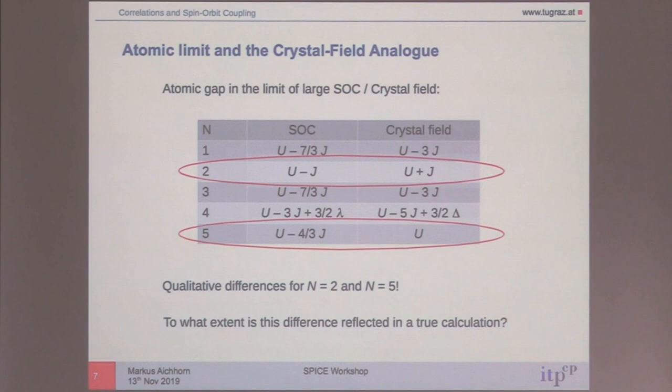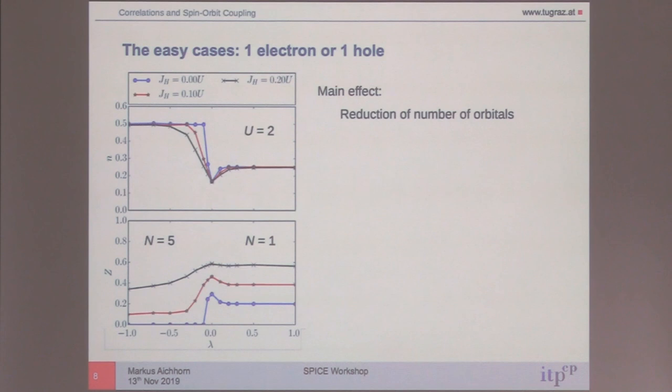These were general arguments just to tell you that n=2 is kind of special. You can do this analysis not in the large limit of the crystal field but for finite values — the formulas are complicated, but you see the same trends: n=2 is kind of special. Now let's go to one electron, or equivalently one hole.